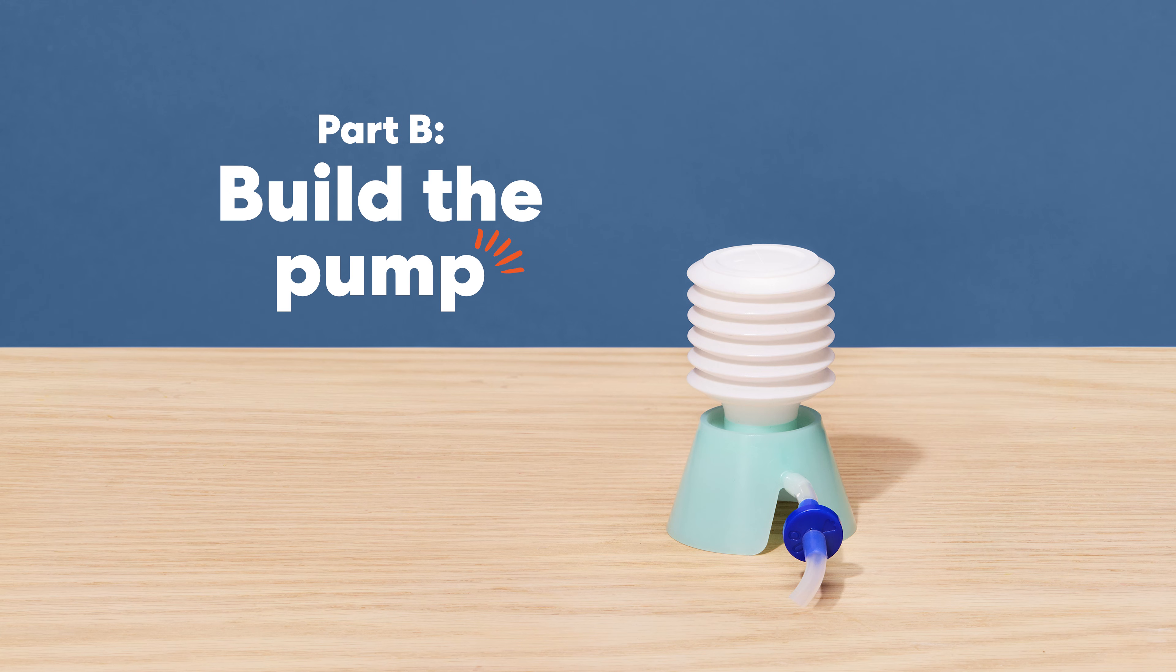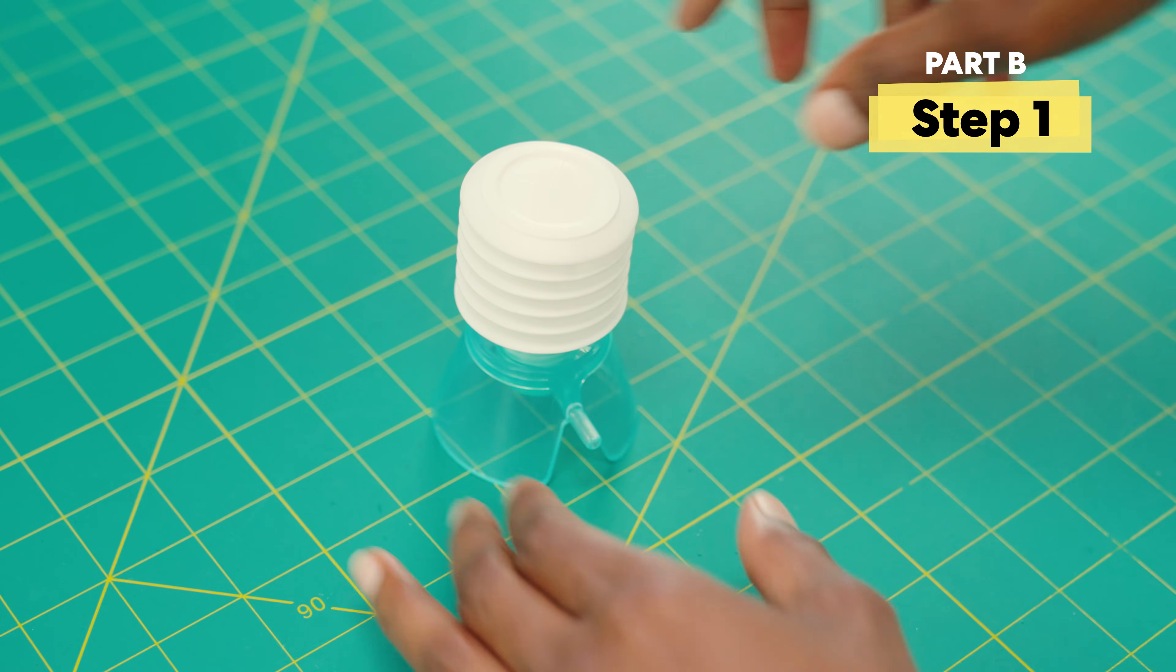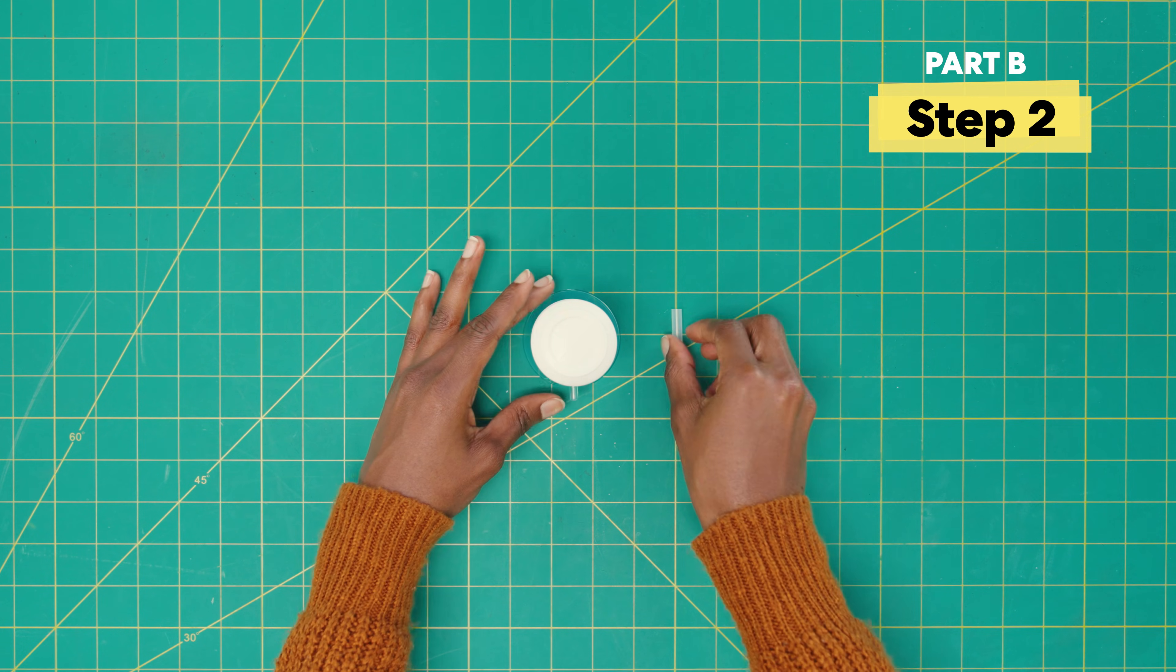Part B, build the pump. First up for the pump, add the pump base and twist on the bellow. Okay, let's add the small tube here.